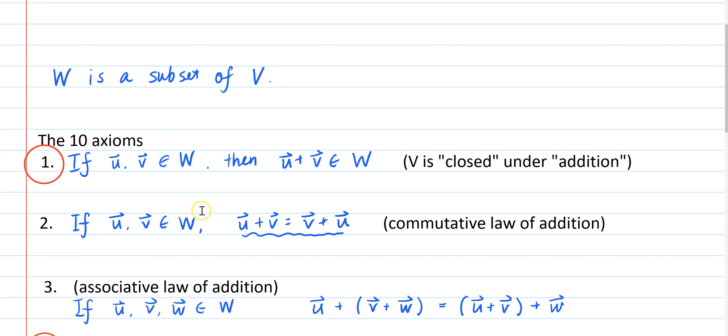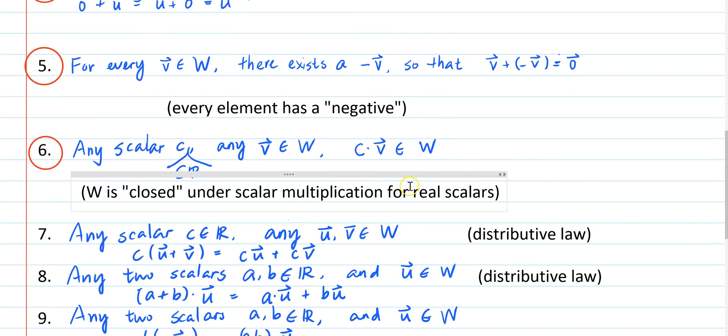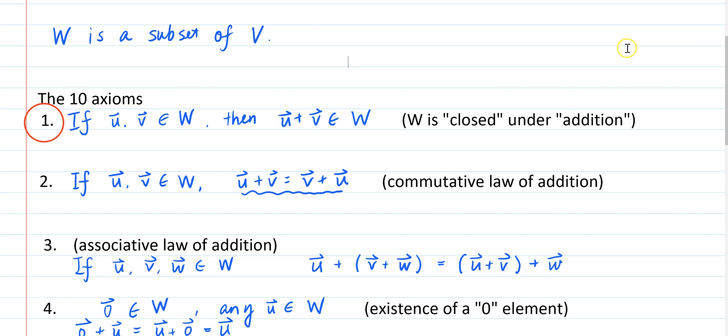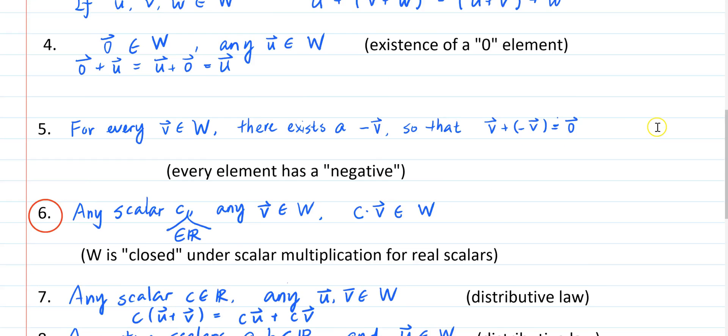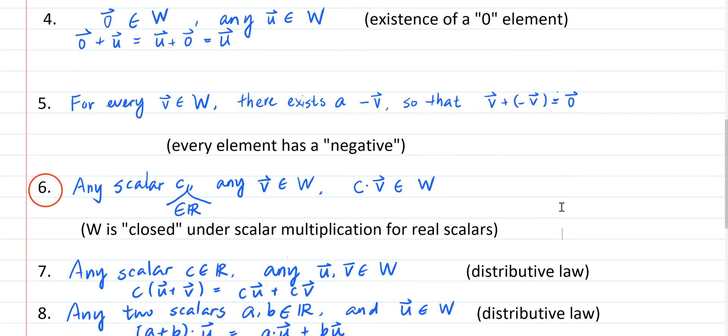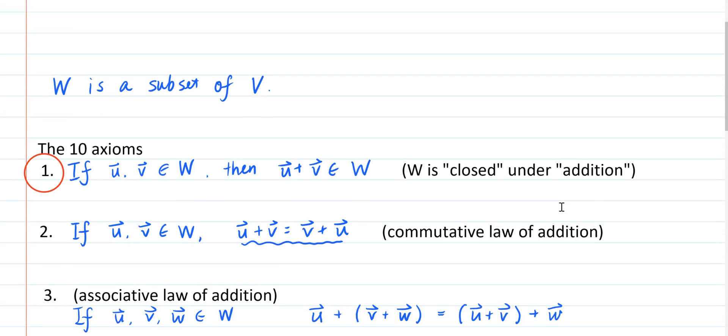So ultimately, the two axioms we need to verify are axiom 1, W is closed under addition, and axiom 6, W is closed under scalar multiplication. So as a summary, if you want to verify that a subset W of a vector space V is a subspace of V, you only need to do two things. Number one, verify W is closed under addition. Number two, verify W is closed under scalar multiplication for any real scalar. Once you verify these two things, then W must be a subspace of V.